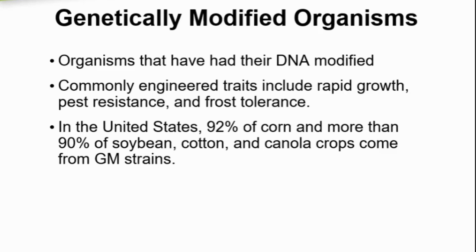Any process in which scientists directly manipulate an organism's DNA is called genetic engineering. Genetically modified organisms, or GMOs, are engineered using a technique called recombinant DNA technology. Recombinant DNA is DNA taken from multiple organisms and pieced together, or recombined, in the process. Scientists place genes that code for desired traits into the genomes of organisms lacking those traits.